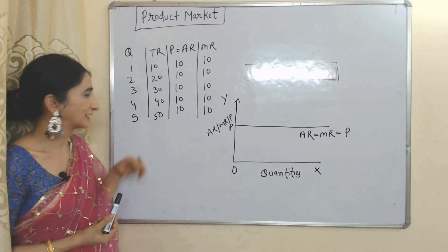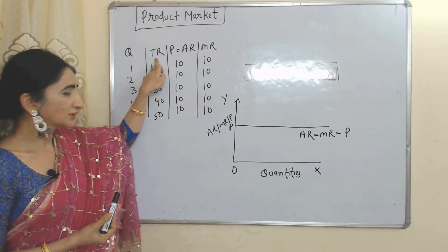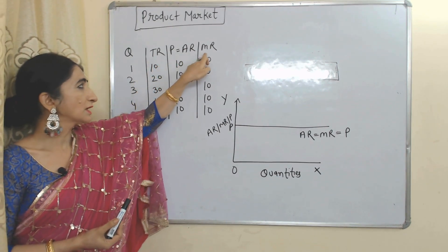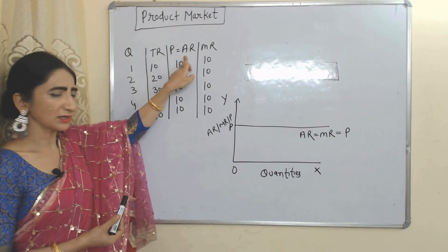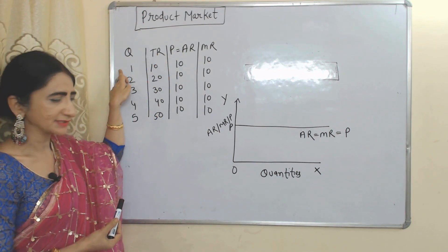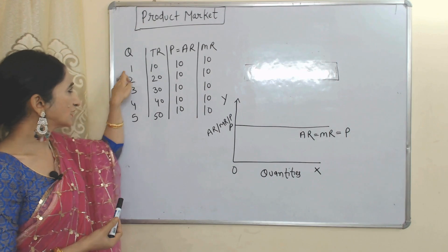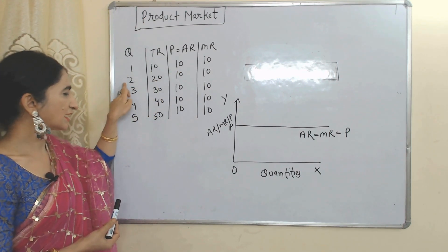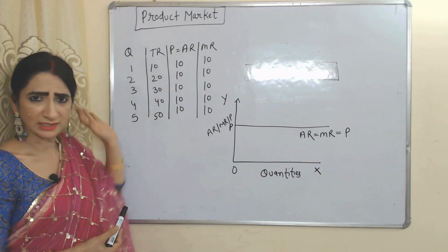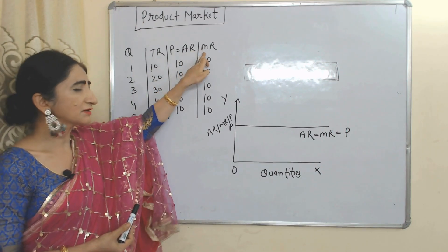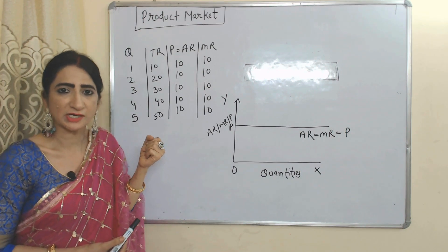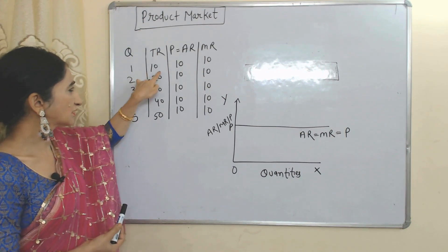We have quantities, total revenue, price — which is equal to average revenue and marginal revenue. As we know, we can calculate average revenue when we divide total revenue by quantities: 10 divided by 1 equals 10, 20 divided by 2 equals 10, 30 divided by 3 equals 10. Marginal revenue means change in total revenue by selling one more additional unit.